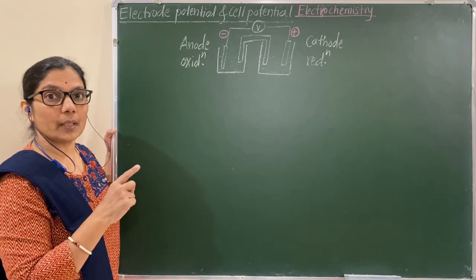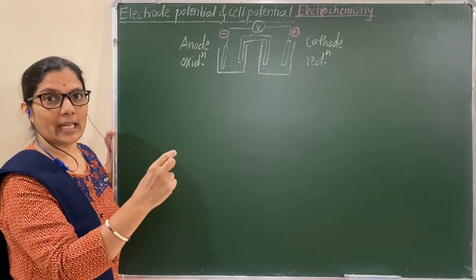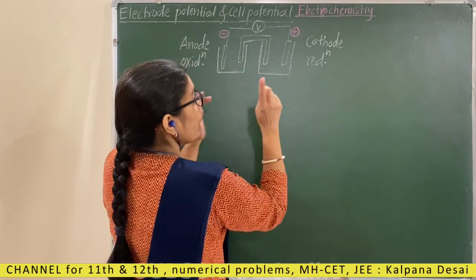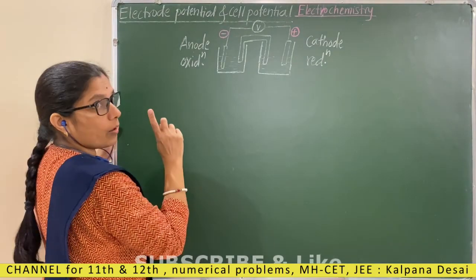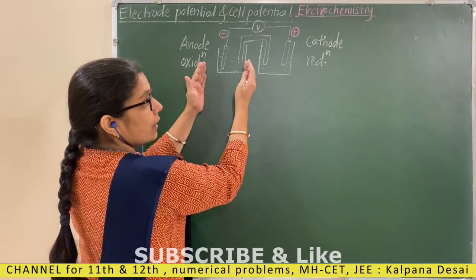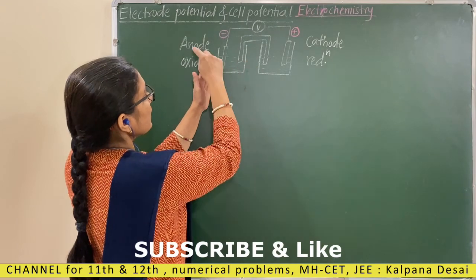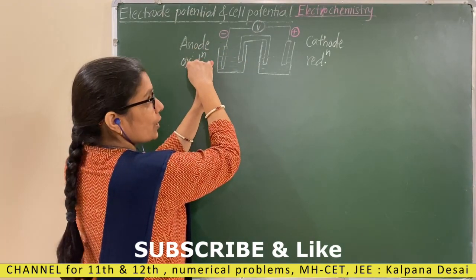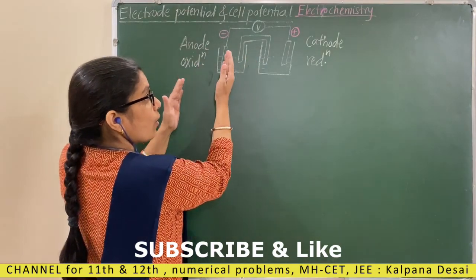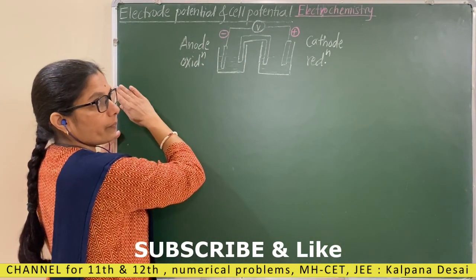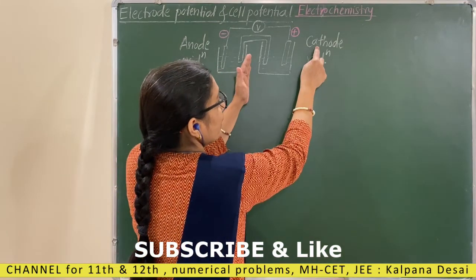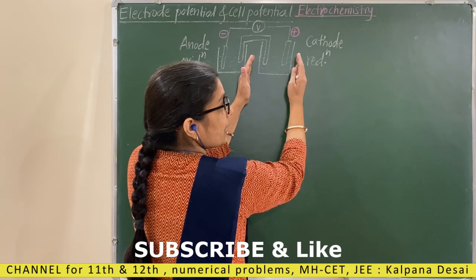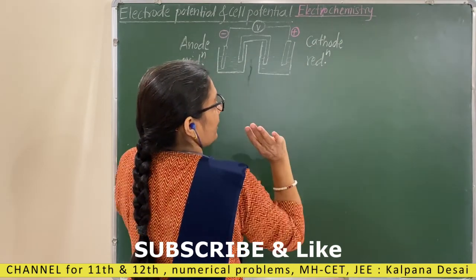In the previous session, you studied the galvanic cell, that is the voltaic cell. It consists of two half cells. Remember, always write the first half cell — that is the anode with a negative polarity, on which oxidation takes place, on the left hand side. Then write the cathode with a positive polarity, on which reduction takes place, on the right hand side.